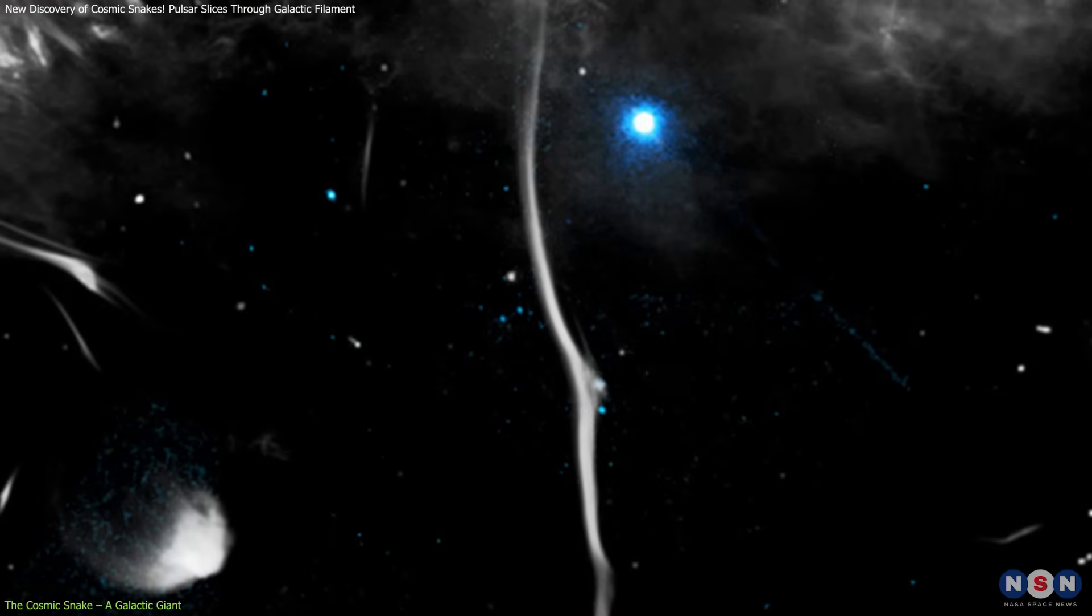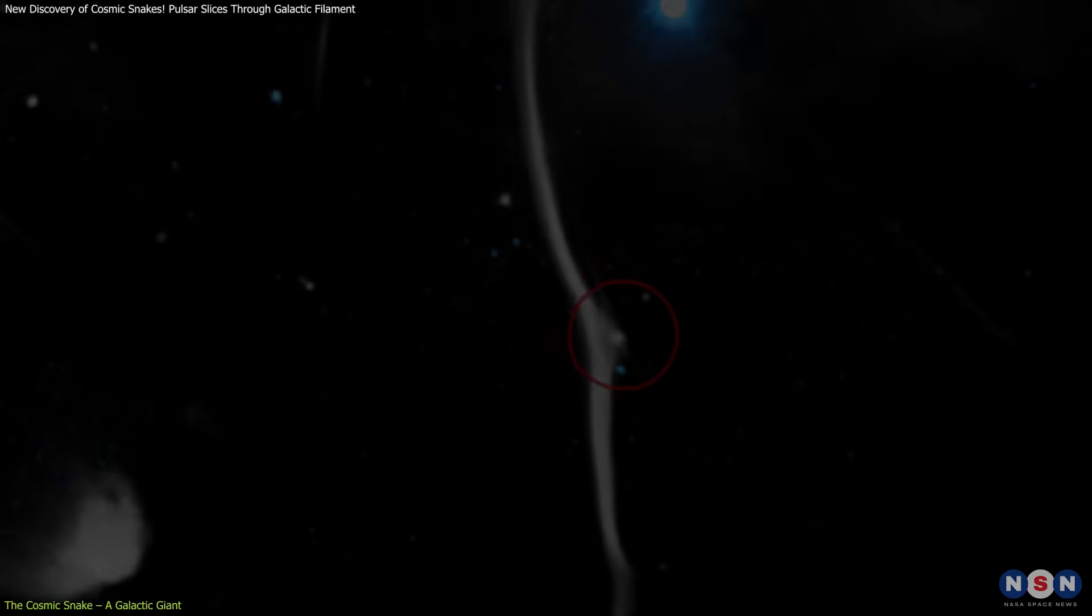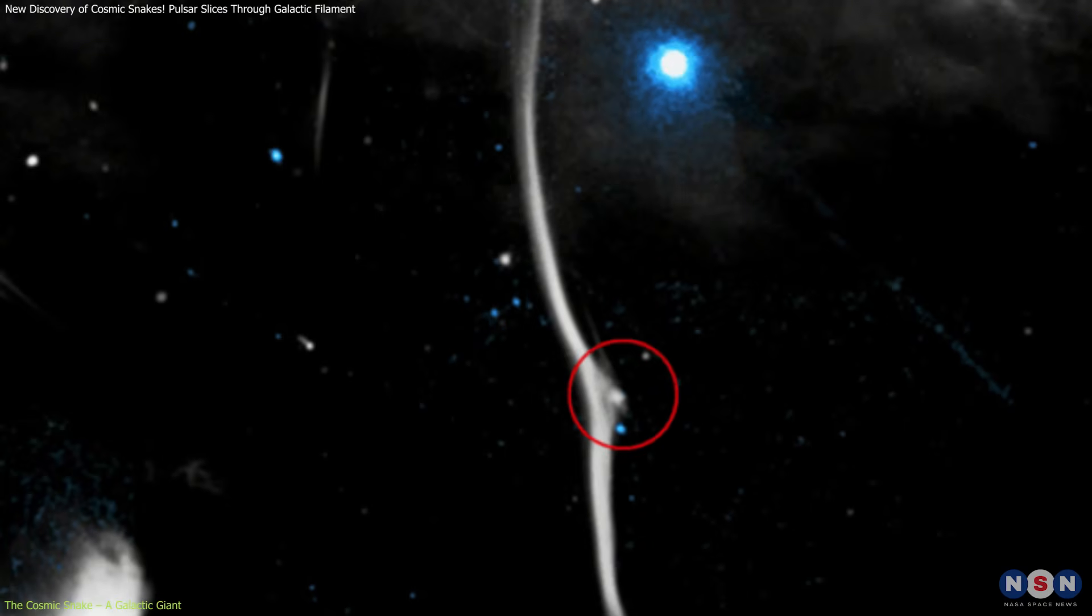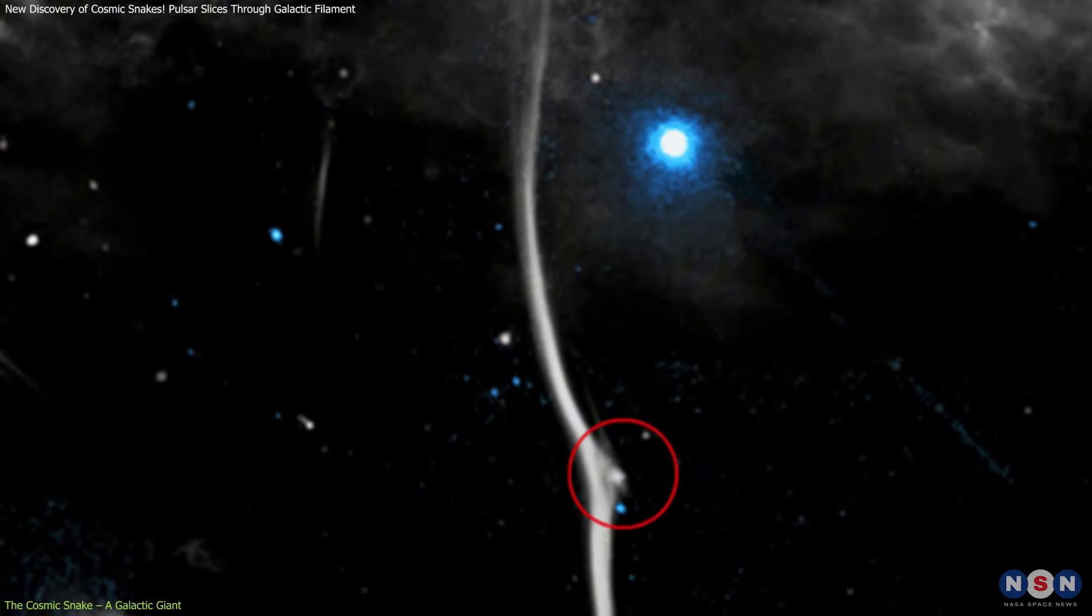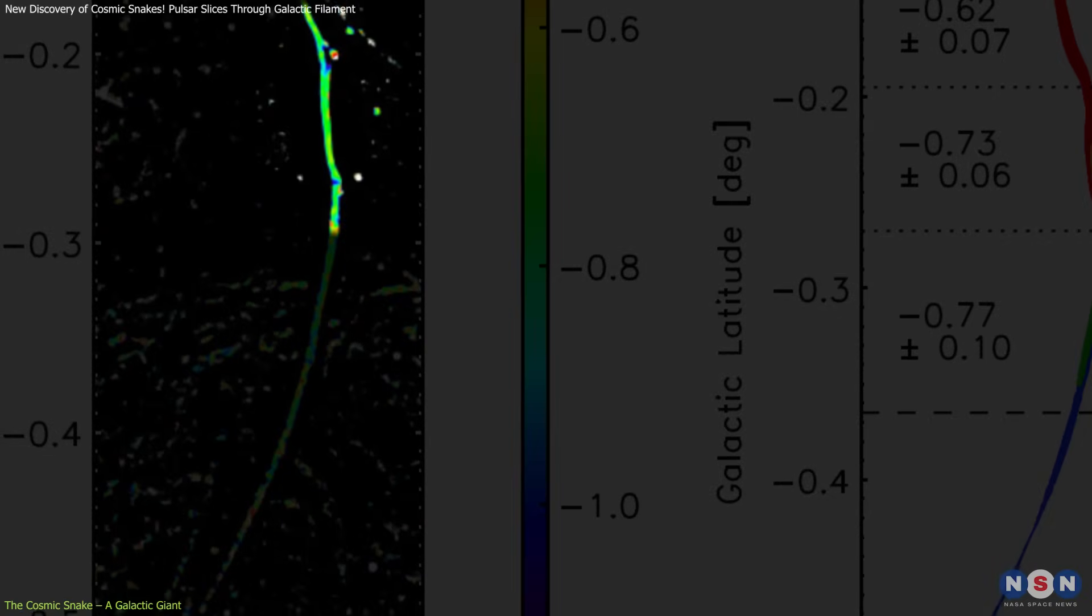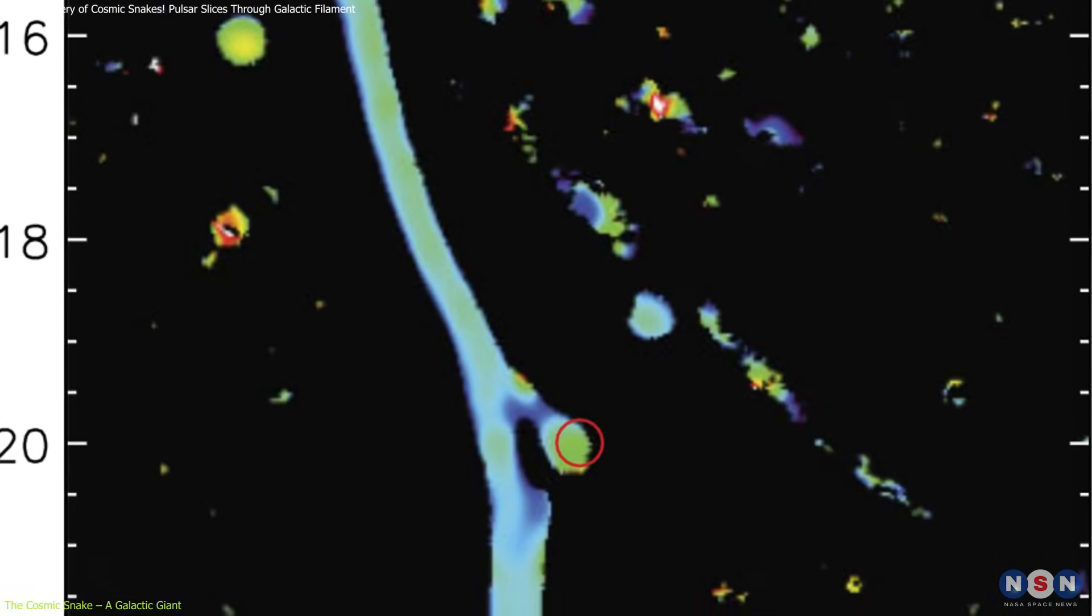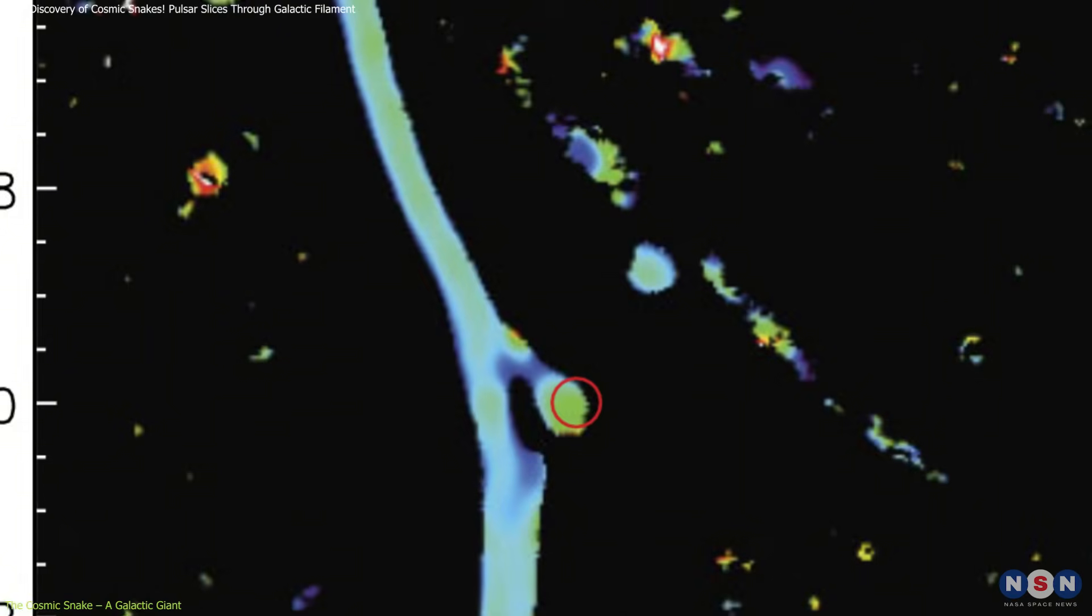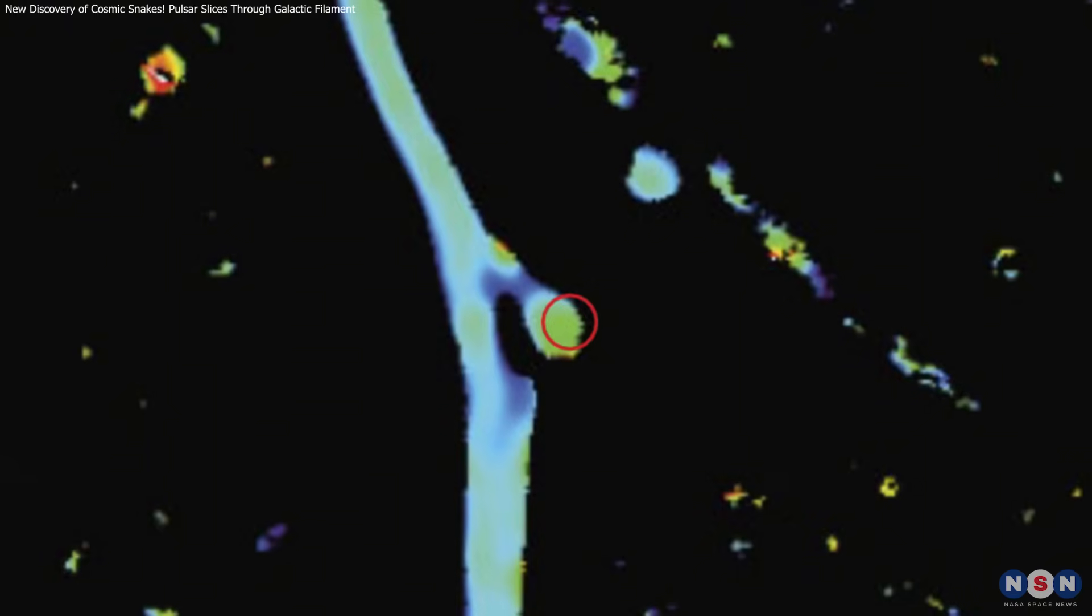But what makes this filament truly fascinating is its fractured structure—two distinct kinks that interrupt its normally smooth path. These sharp bends have long confused astronomers. Why would a galactic filament bend so abruptly? What force could disrupt such a massive, magnetically-aligned structure? That's where the next chapter of this cosmic story begins.